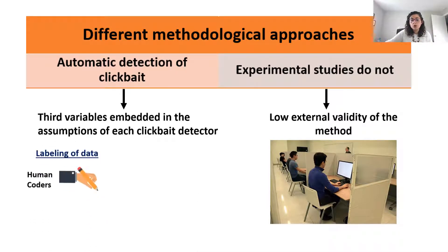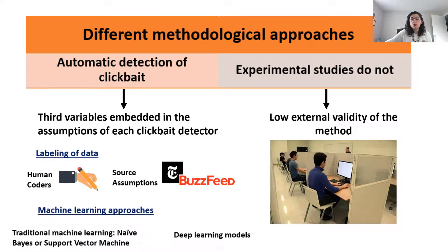While some computational models are trained with data labeled by human coders, other models utilize source assumptions. Likewise, some detectors are built using traditional machine learning, while others utilize more complex deep learning models.